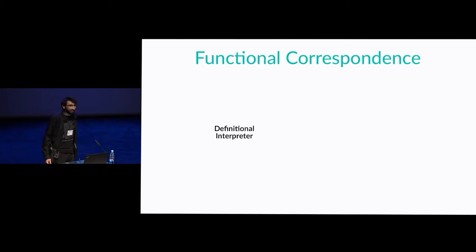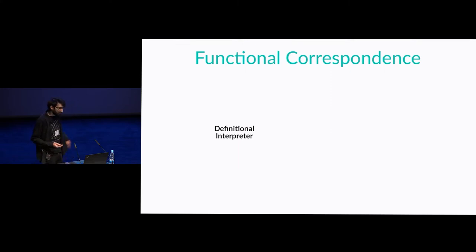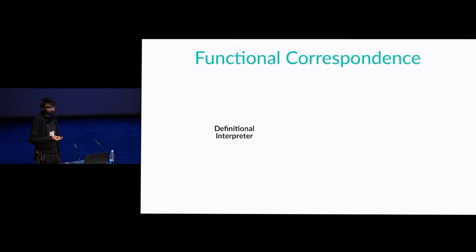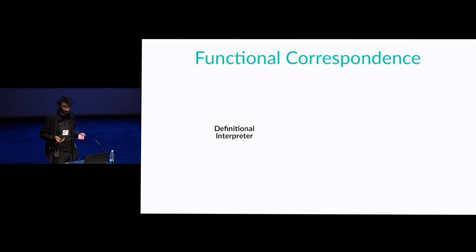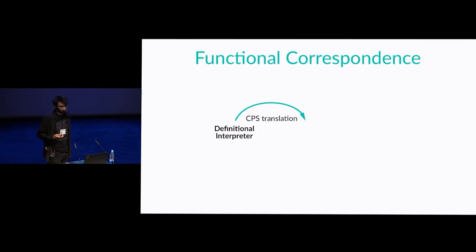This is already my third conference talk where functional correspondence is a crucial tool to obtain the result. We've put an online video with an example of functional correspondence on the web. To define a language — for example, a call-by-need evaluator — we can write a program that executes this language. But then some aspects of the defined language are hidden at the meta level, because evaluation order depends on the meta language. To make it explicit, we can do a CPS translation of such an interpreter, making it more visible to the reader.